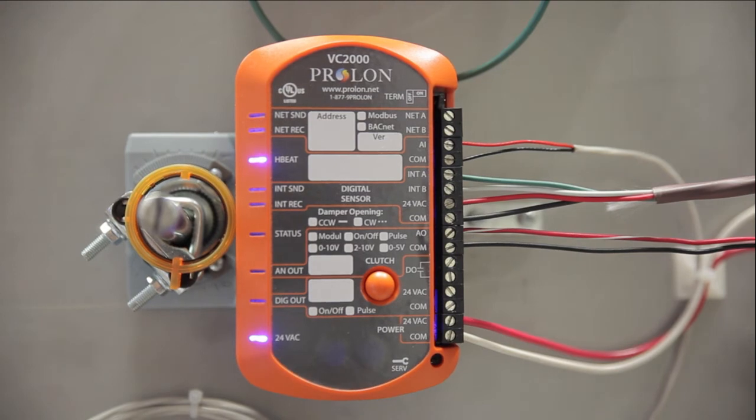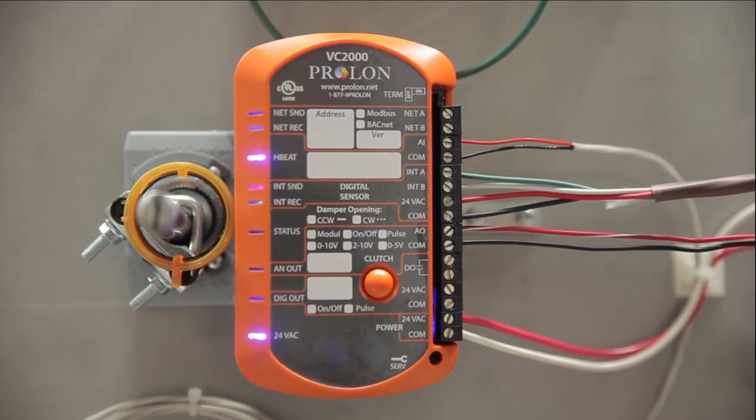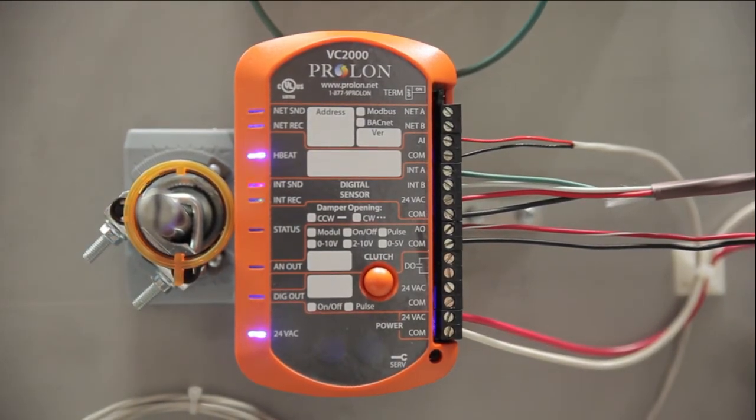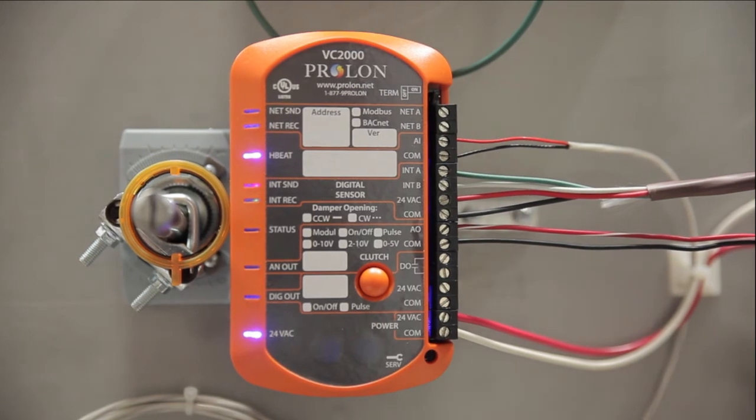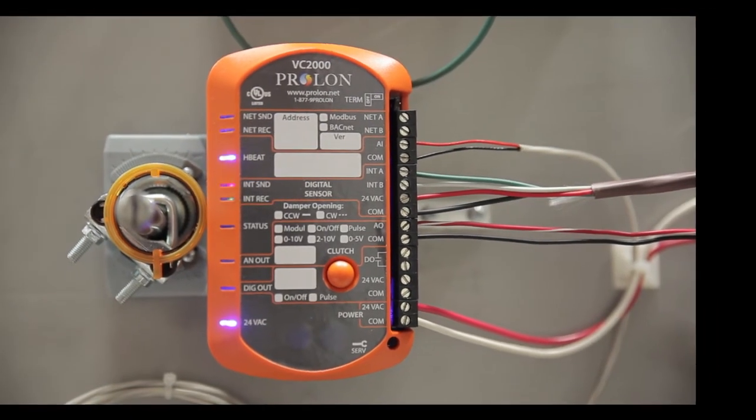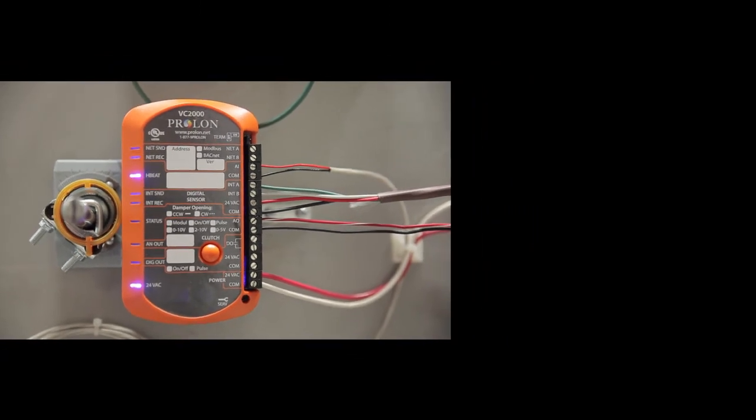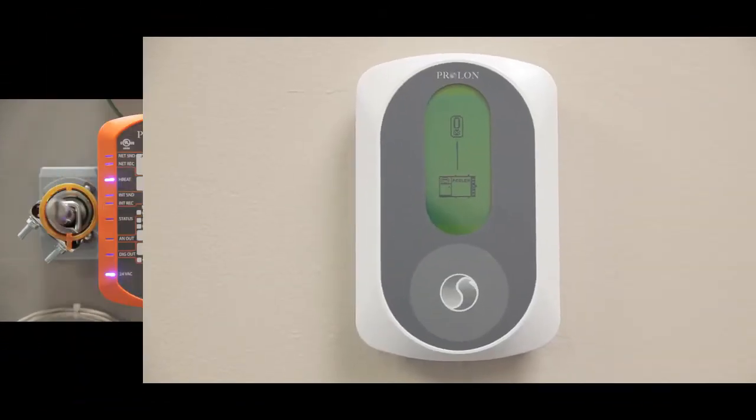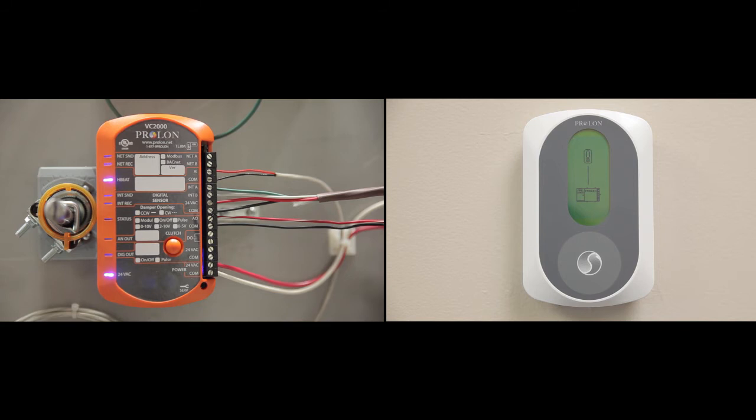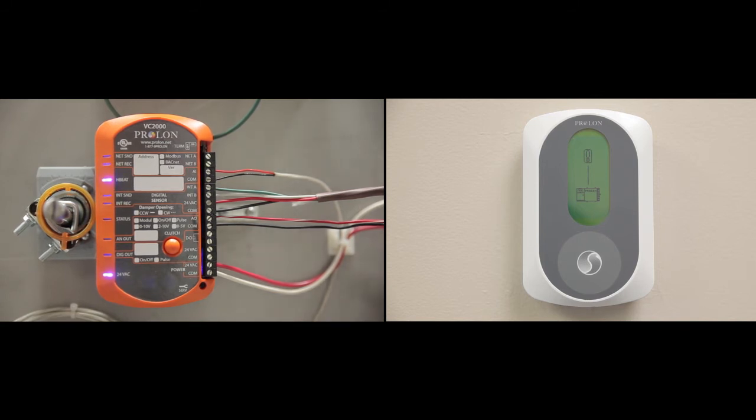The blue power and heartbeat lights confirm normal operation. The yellow status light indicates the damper opening direction. The combined red and green lights will blink to validate the communication link between the controller and its digital wall sensor. The ambient temperature displaying on the wall sensor also confirms communication has been established.